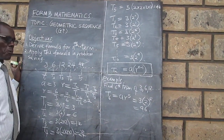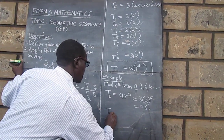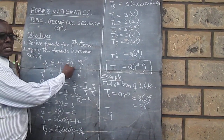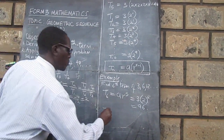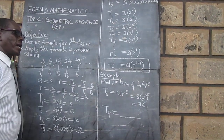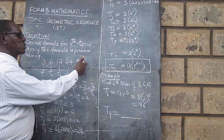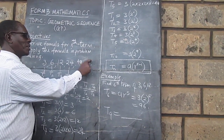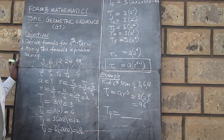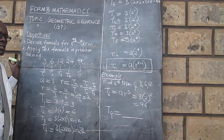For your homework, obtain term number 9 for the same GP. See whether you'll be able to get the required value. We've said term number 9 — you can even continue by doubling, and you will be able to confirm whether the formula is working or not.